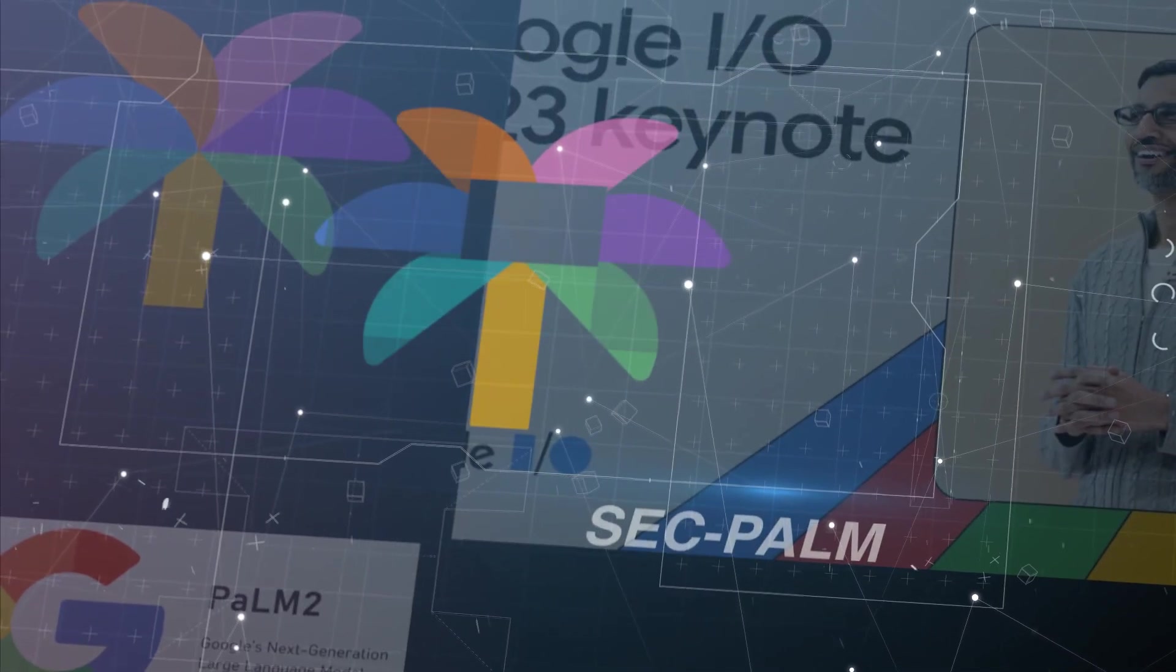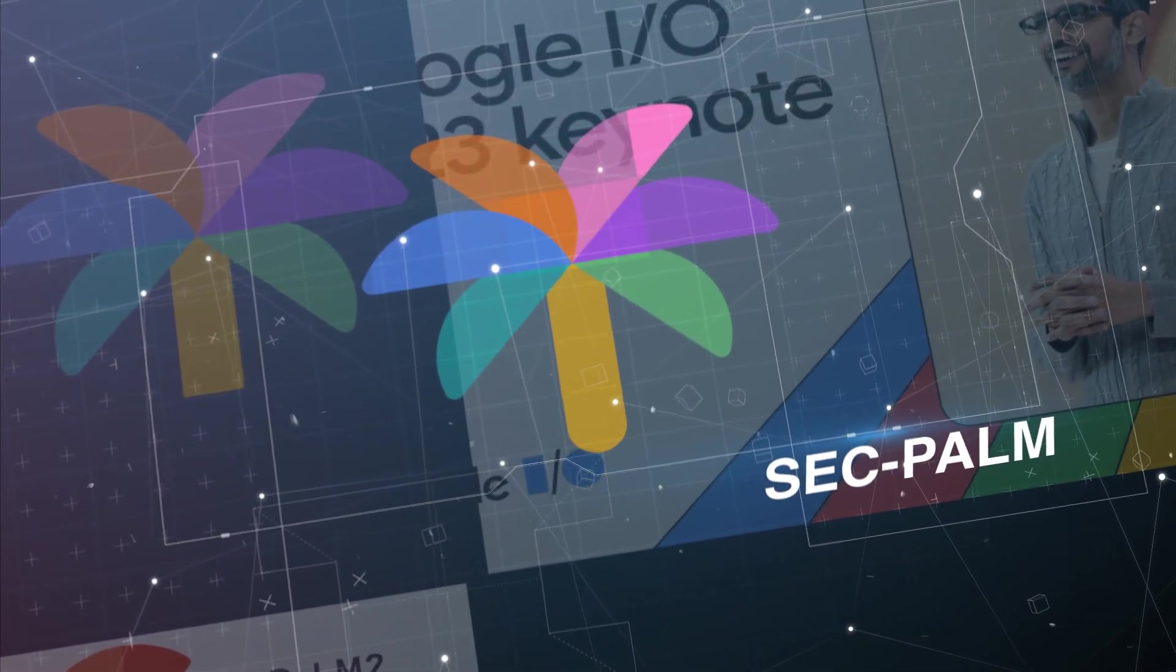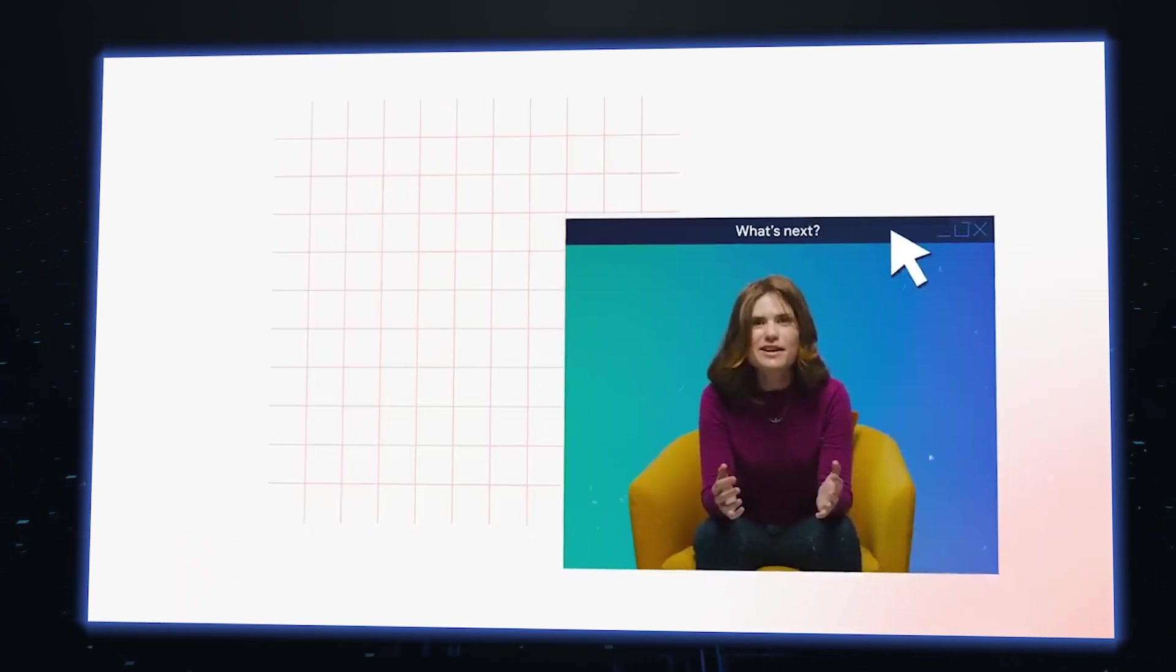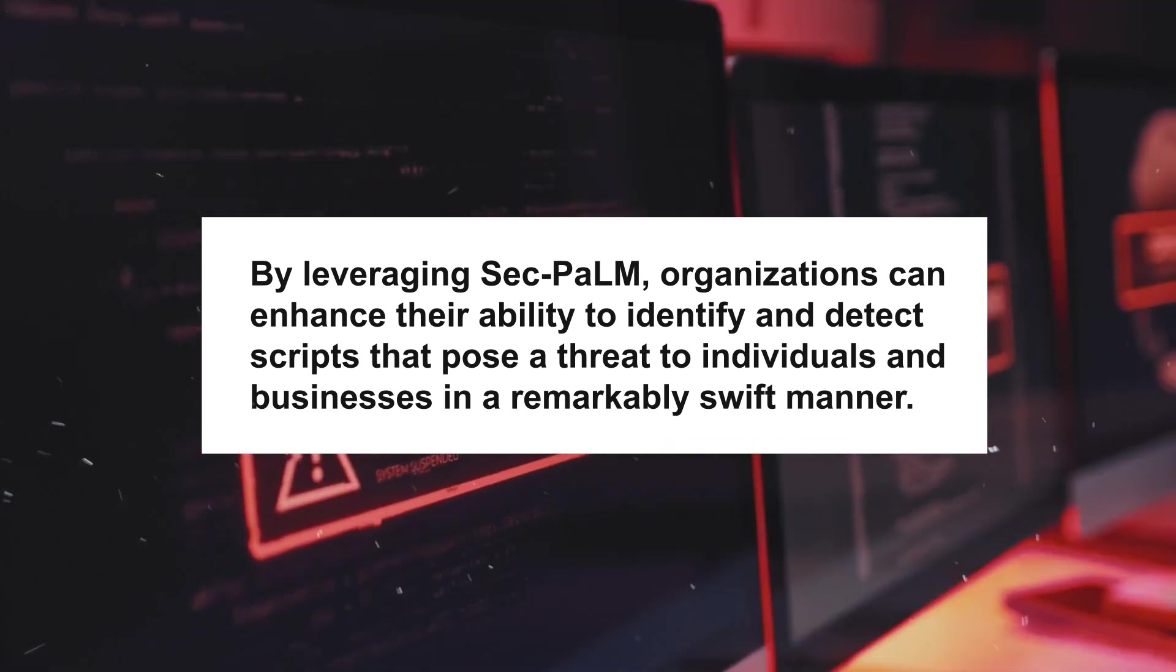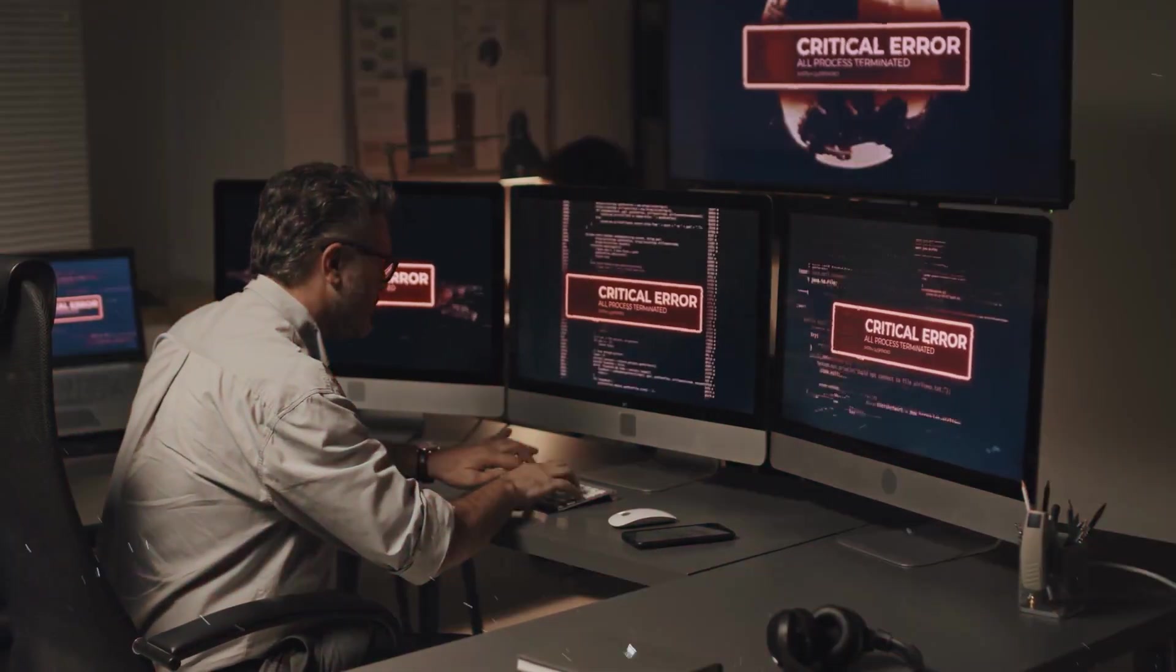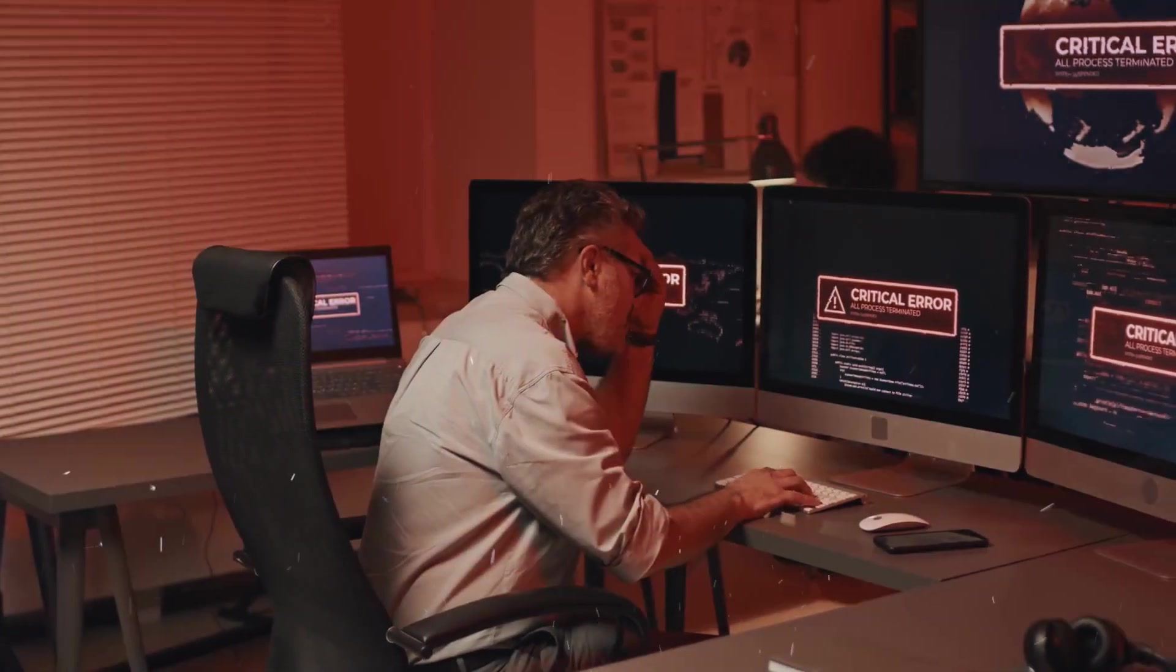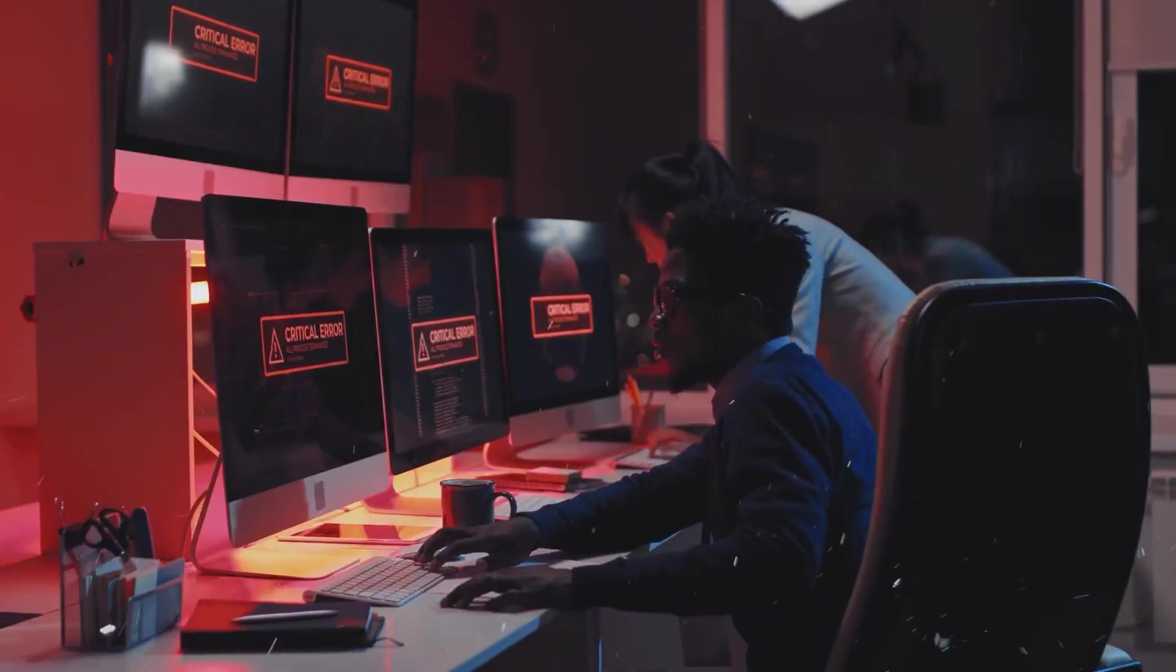Sec-PaLM, a specialized iteration of PaLM 2, has been specifically trained on security use cases, presenting a significant advancement for cybersecurity analysis. This specialized version is accessible through Google Cloud and employs the power of artificial intelligence to analyze and explain the behavior of potentially malicious scripts. The integration of AI capabilities within Sec-PaLM empowers cybersecurity analysts to more effectively analyze and understand the intricate nature of malicious scripts. This enhanced understanding allows for quicker and more accurate identification of threats, enabling proactive measures to mitigate risks and protect against potential cyber attacks.